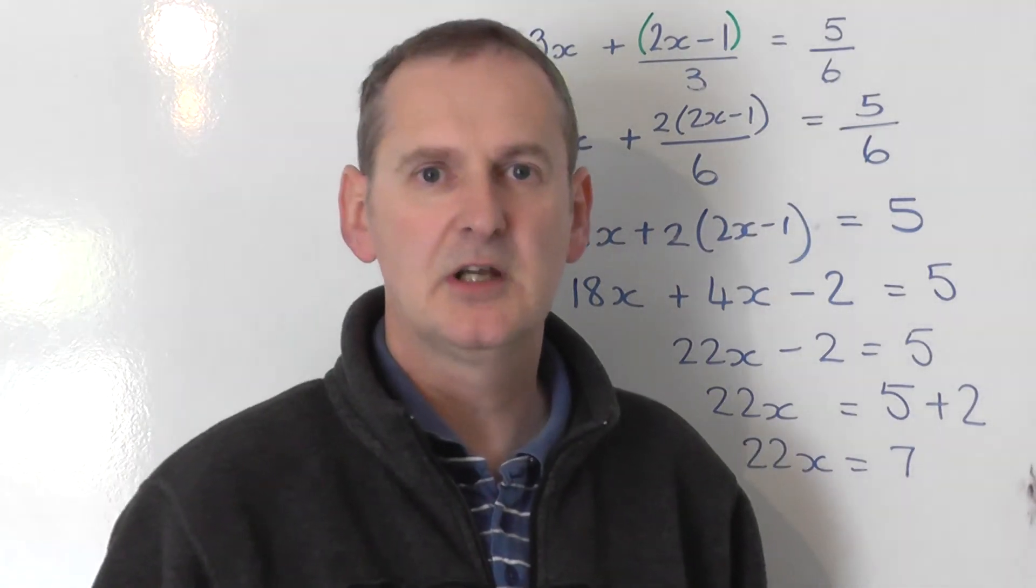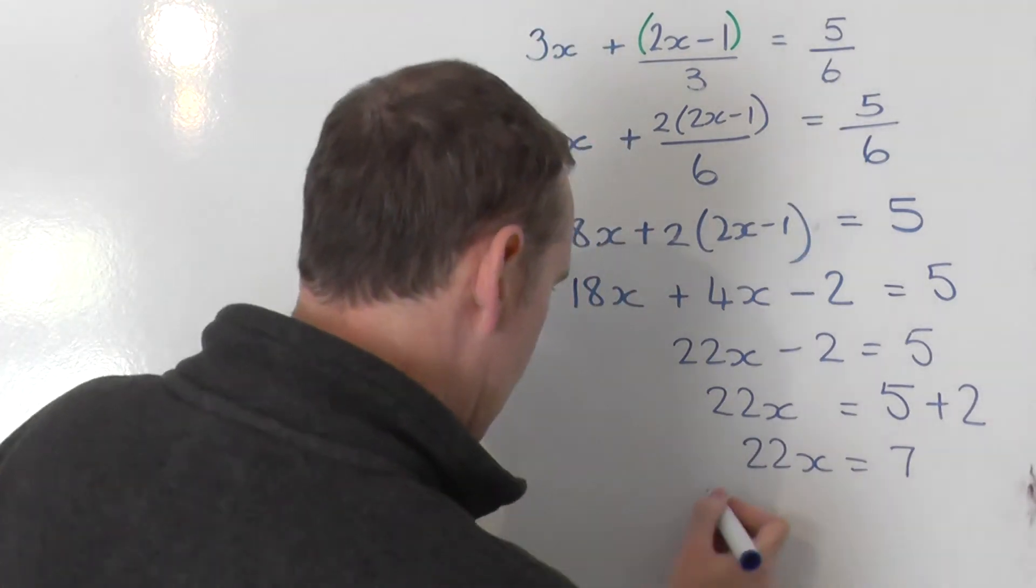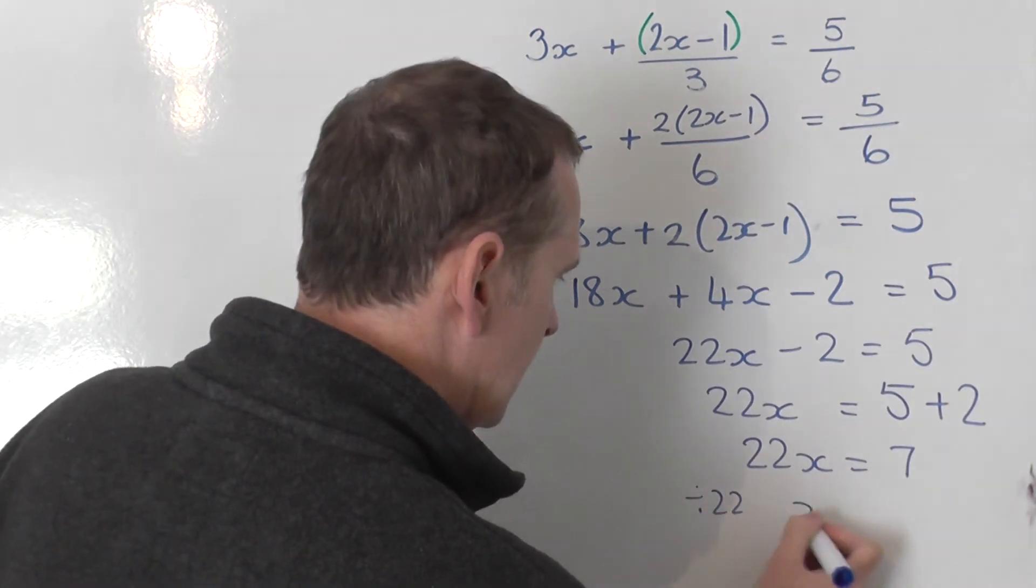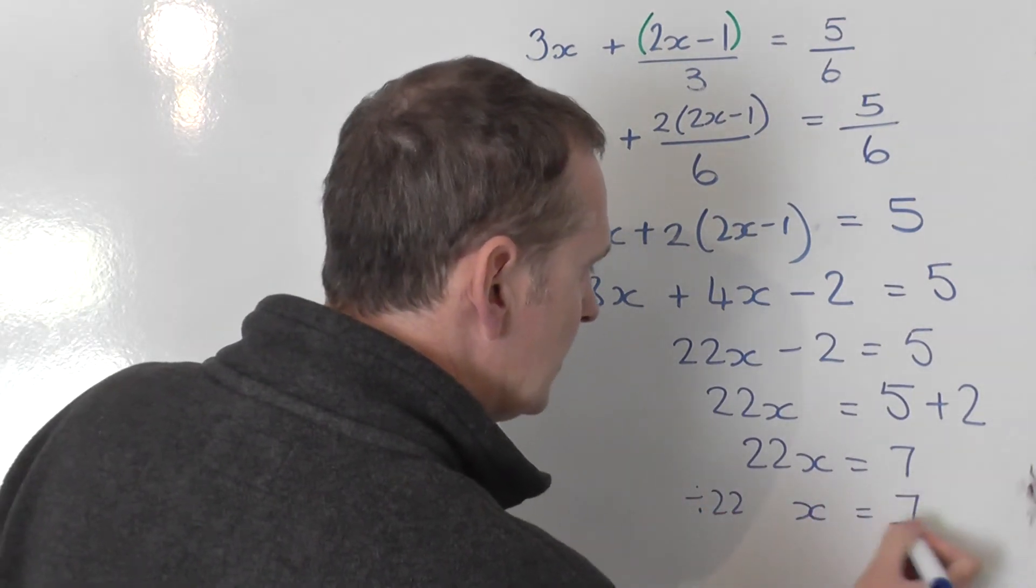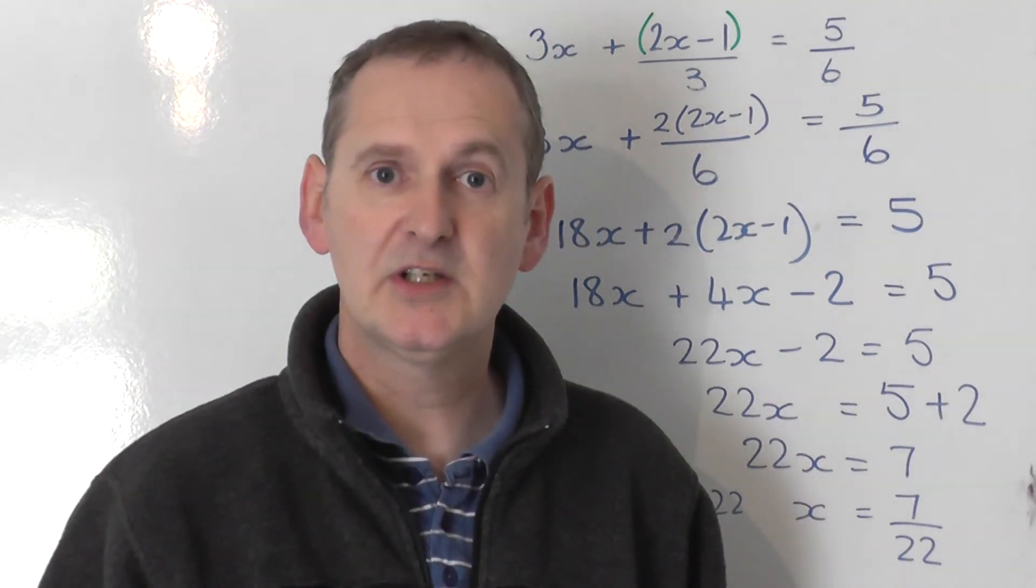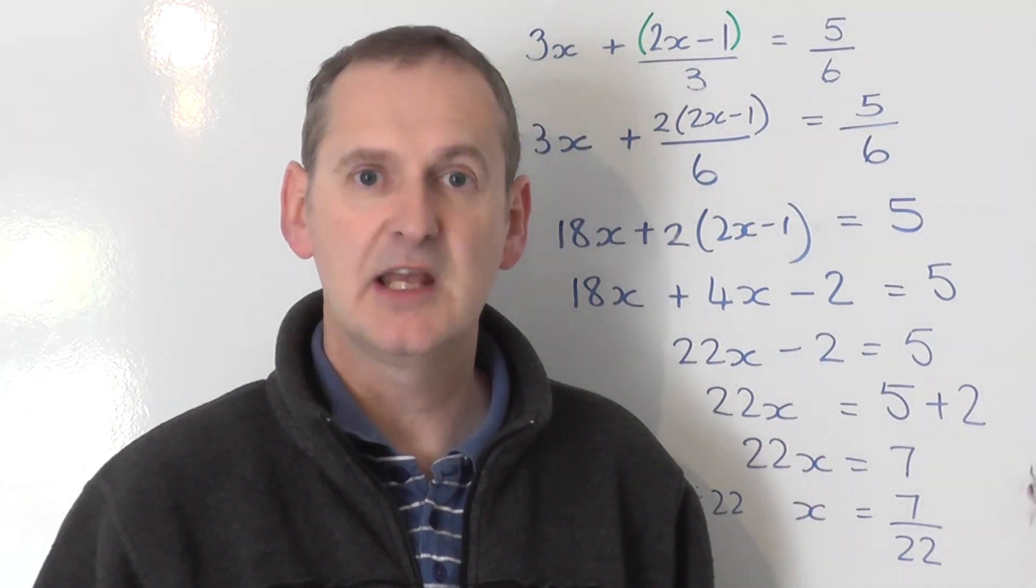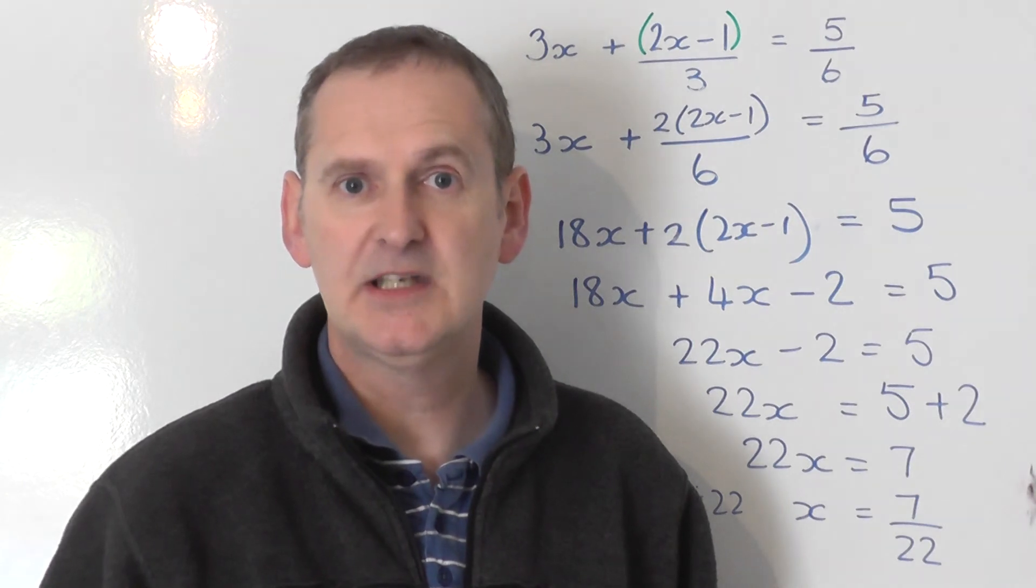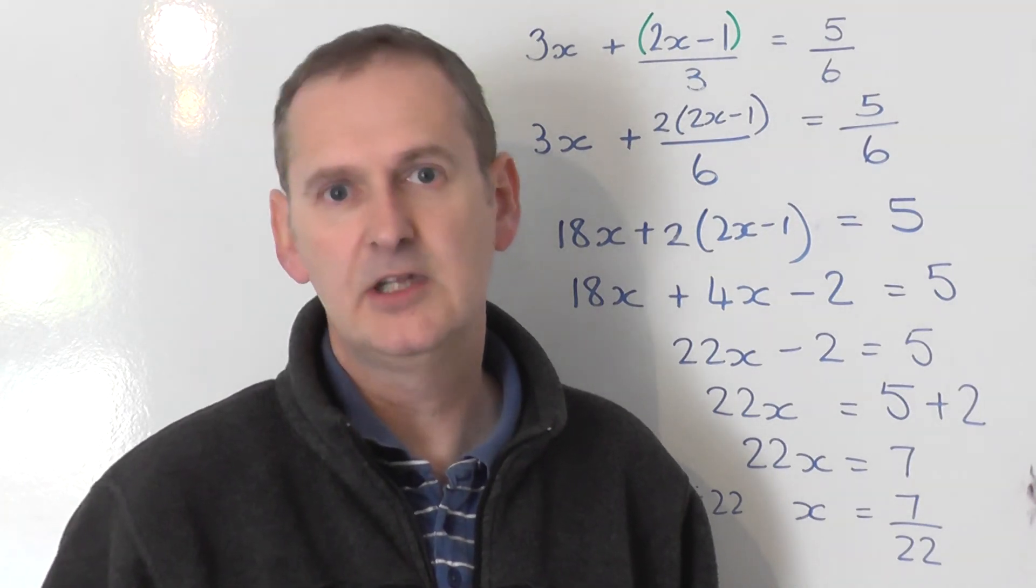But I don't want 22x. I want 1x. So divide that by 22. You get x. Divide that by 22. And you get 7 over 22. That's an awkward answer, so the answer is 7 over 22, 7 twenty-seconds. That's the end of this equation.